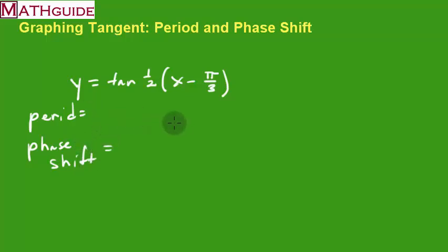Well the period is going to be 180 degrees and we're going to divide it by a half. We're not dividing by two, we're dividing by a half. So 180 divided by a half is the same thing as 180 times the reciprocal, two. So 180 times two is 360. What's the phase shift? The opposite of this number, pi thirds.